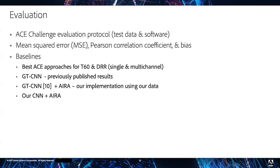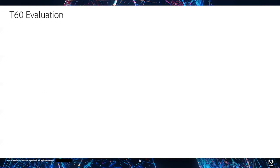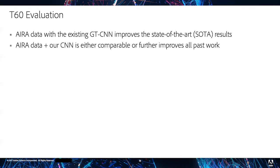Some conclusions for the T60 evaluation: using AIRA data with existing methods can further improve the state-of-the-art. Using AIRA data with our simplified CNN is either comparable or further improves the state-of-the-art. The correlation coefficient of our final estimator approaches the correlation coefficient of our ground truth estimator when compared to the ACE challenge estimator, suggesting it will be difficult to improve the results further on this dataset.